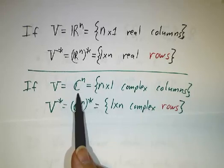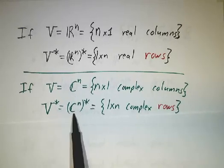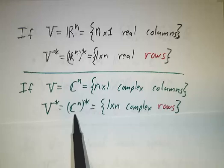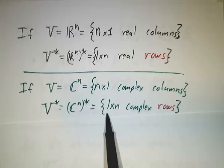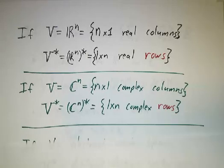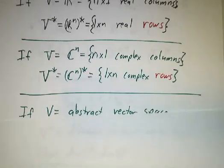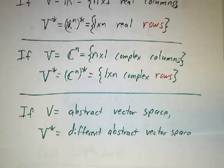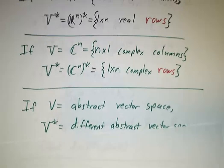If V is C^n, then V star is all linear transformations from C^n to the complex numbers, described by 1 by n rows. And if V is an abstract vector space, then V star is a different abstract vector space.